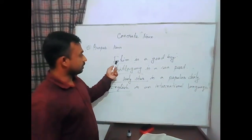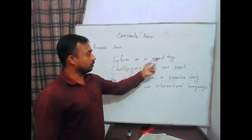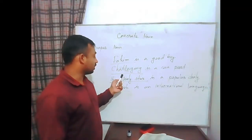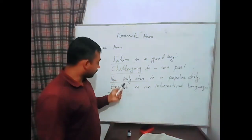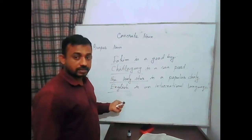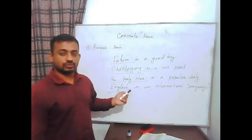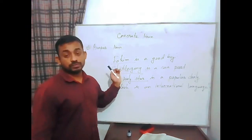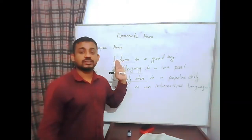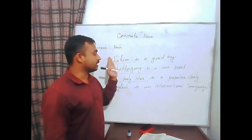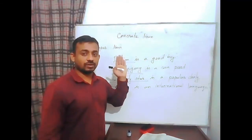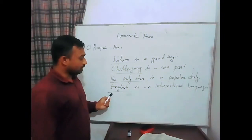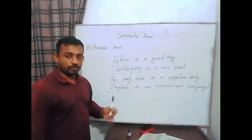Here, in the sentence 'Pankhin is a good boy,' Pankhin is used as the subject. Chittagong, The Daily Star, and English — all these nouns are also used in a sentence as a subject. Nouns may be used in a sentence as subject, object, or complement. So these are all proper nouns. Now we are going to common nouns.